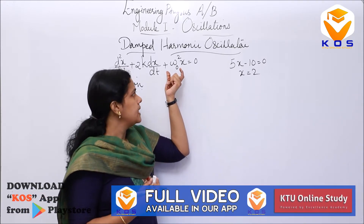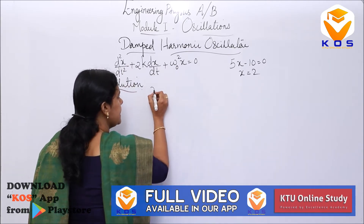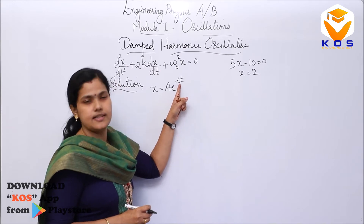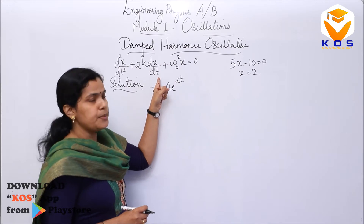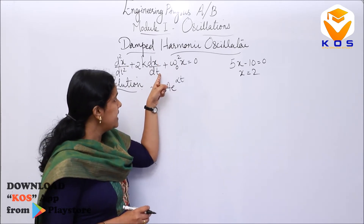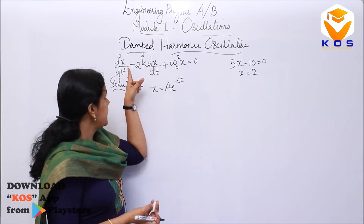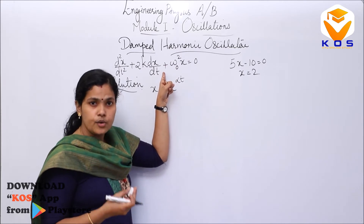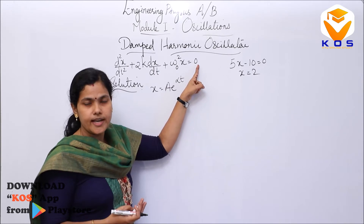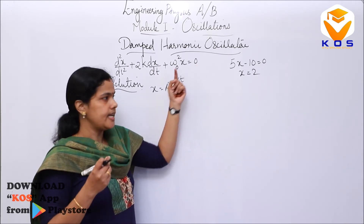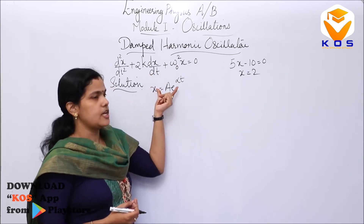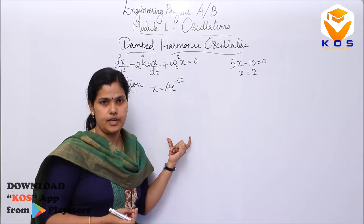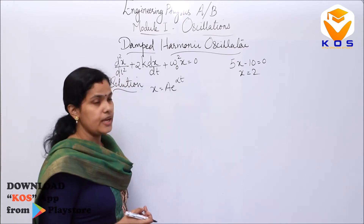So I am going to assume the solution to this equation as x equal to A·e^(αt), where A is a constant and α is also a constant. This is by heart — you should memorize this expression: x equal to A·e^(αt).